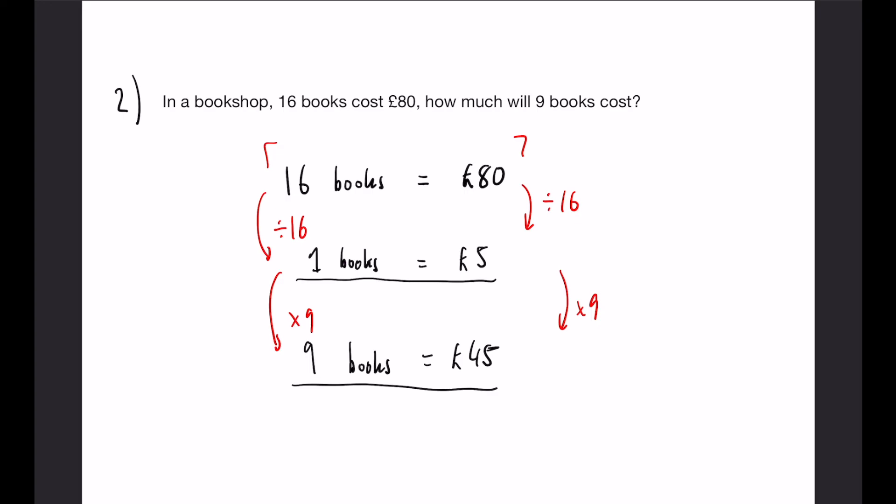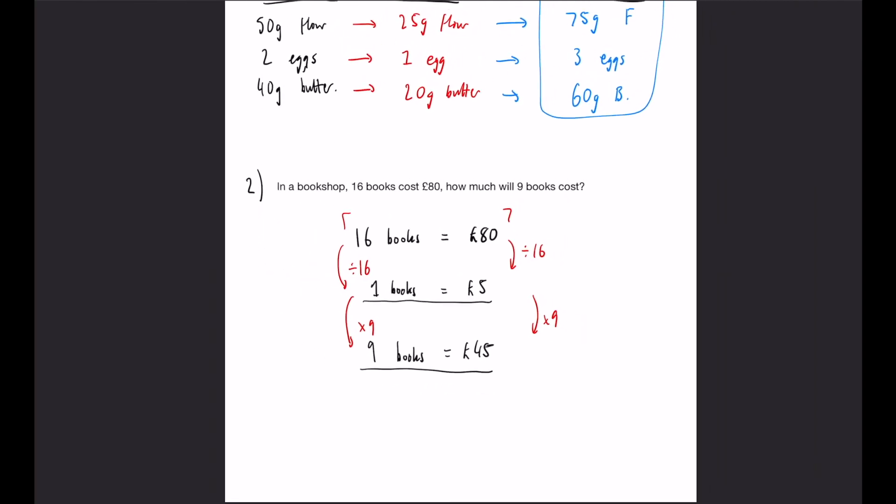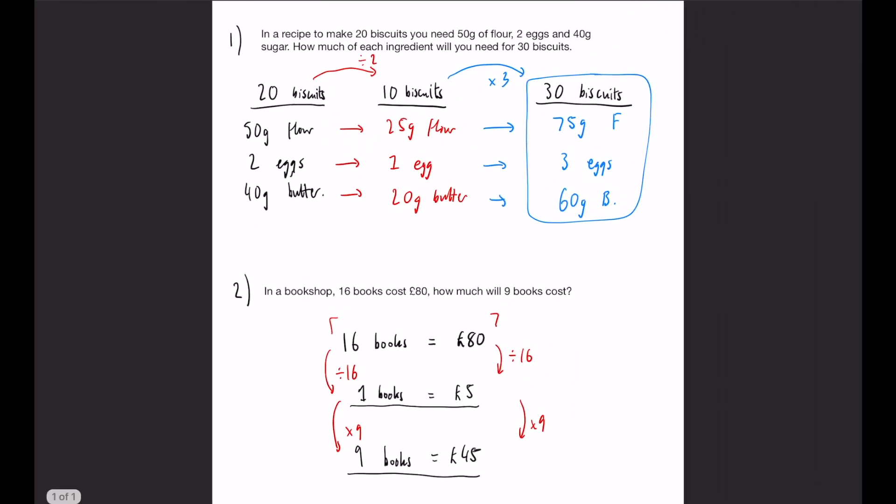Often with questions like this they will ask what assumption have you made. Your assumption here will be that all the books cost the same amount of money, because just because 16 books cost £80 in real life doesn't mean that every single book is going to cost £5. You might have some books that are £6 and some books that are £4. So that would be the assumption that you always make, and this will be very general throughout this topic. Thank you very much for watching and I hope that helped.